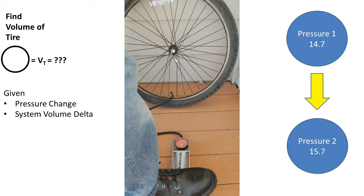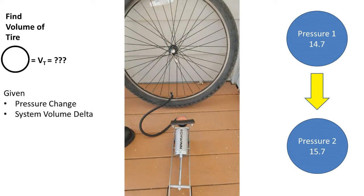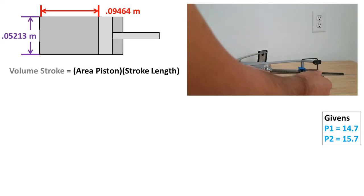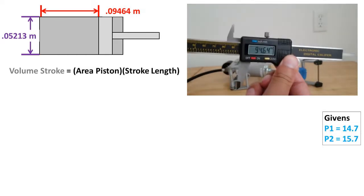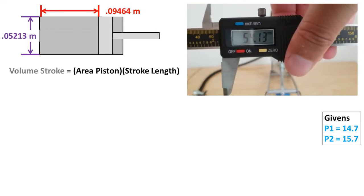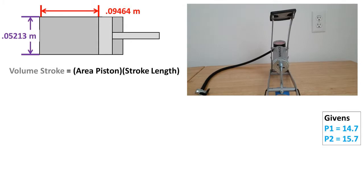We want to find the volume of the bicycle tire when only given the pressure and the volume change. We are given a stroke length of 0.0946 meters and a diameter of the piston of 0.05213 meters. Note, I'll be subtracting 2 millimeters from the diameter measurement to account for material.